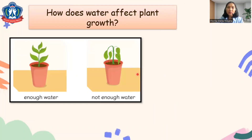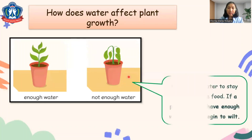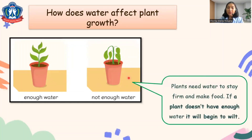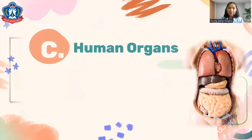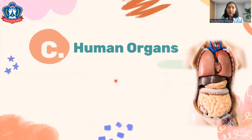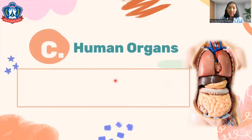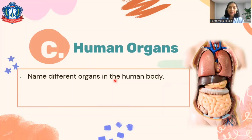Next, how does water affect plant growth? Here this plant has enough water, and here not enough water. Plants need water to stay alive, stay firm, and to make food. If a plant doesn't have enough water, it will begin to wilt, and the plant may die if there is no water.